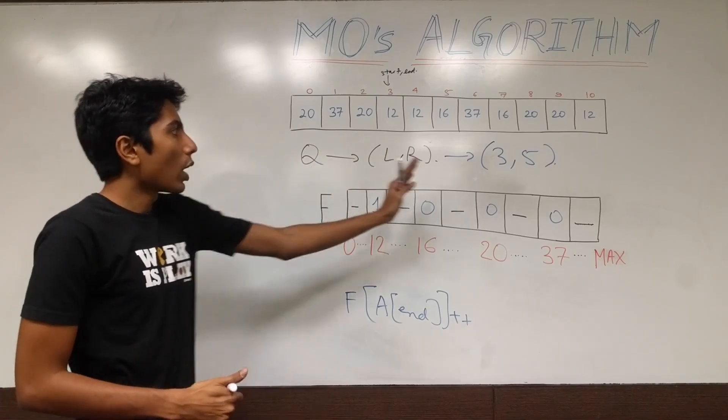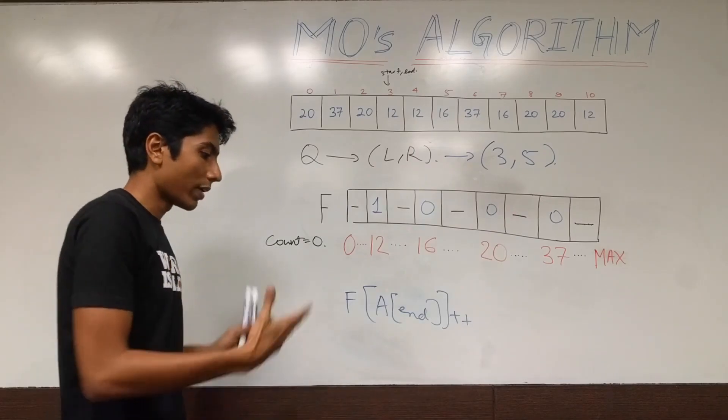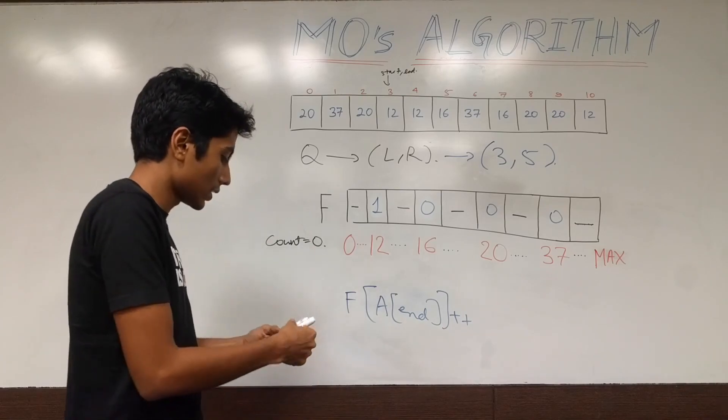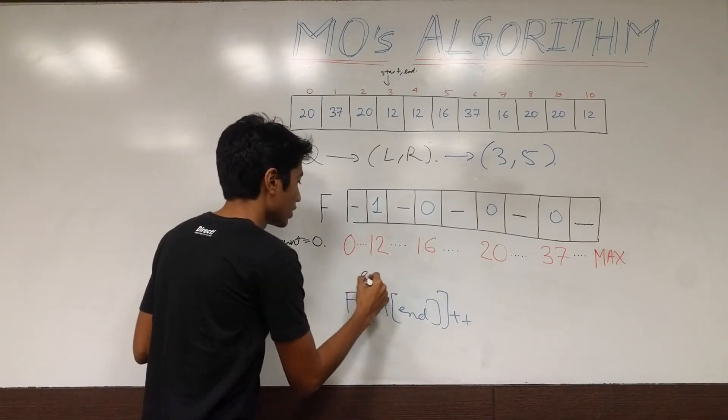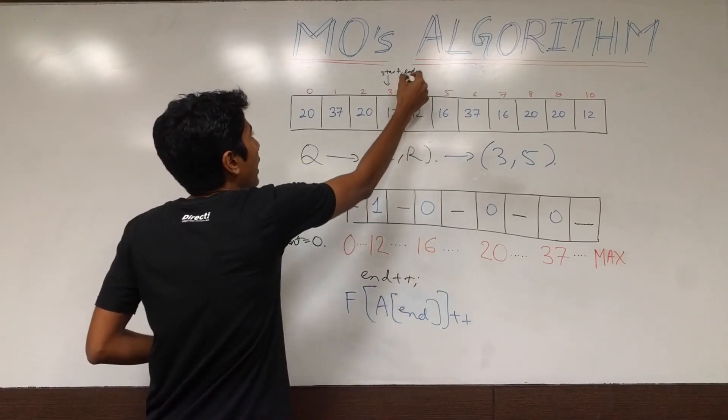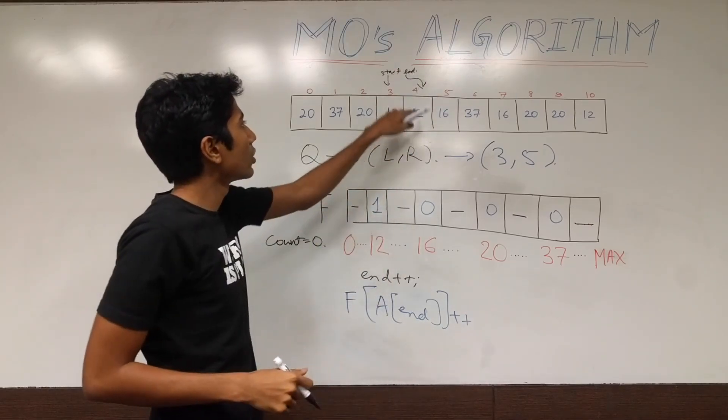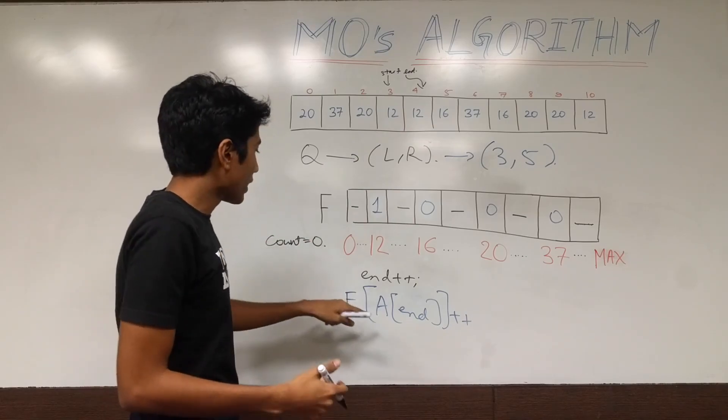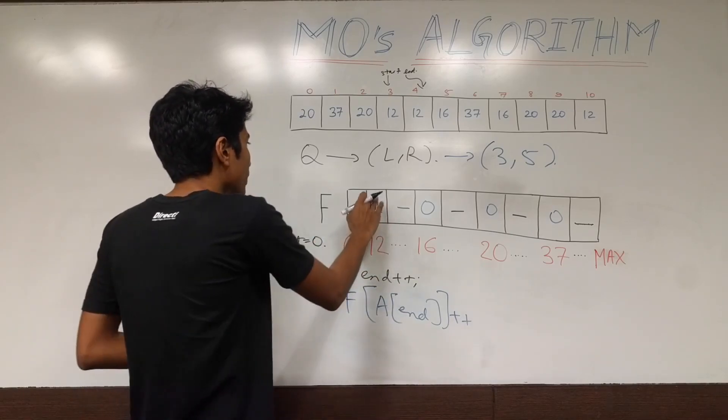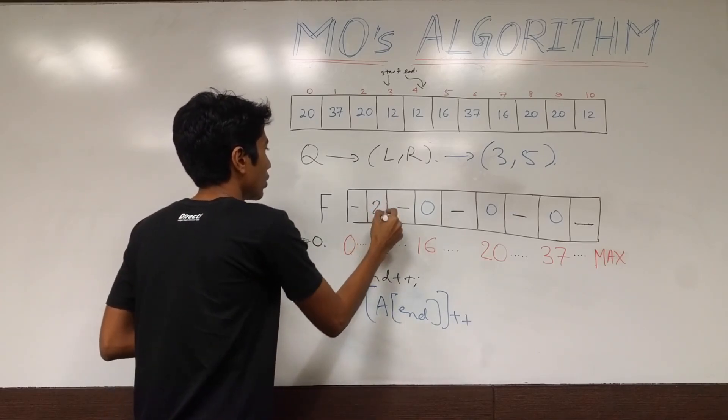Now end is still not up to R1, so we are going to keep pushing it to the right. So whenever end goes to the right, you expand your range, which means we are adding elements. So end plus plus, same condition as 1, end is equal to 12 now. Same thing again. We are going to be incrementing the frequency because our range expanded. So from 1, this becomes 2.